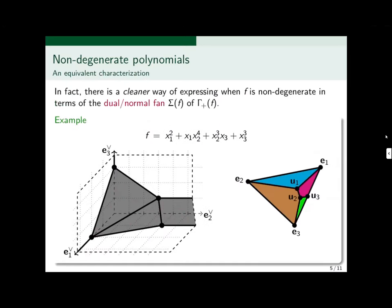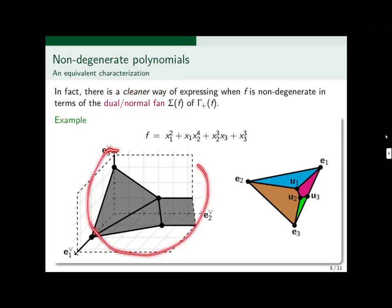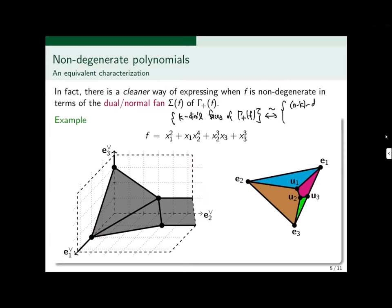Now I'll introduce an equivalent characterization for what it means for a polynomial to be non-degenerate. There's a cleaner way of expressing this in terms of the normal fan of the Newton polyhedron of F. Let me define what this normal fan is. You start from the Newton polyhedron. The normal fan satisfies the property where k-dimensional faces of the Newton polyhedron of F are in one-to-one correspondence with n minus k-dimensional cones in the fan Σ(F). So n minus k-dimensional cones in this fan.